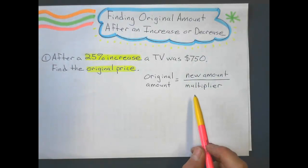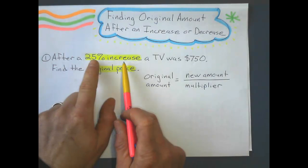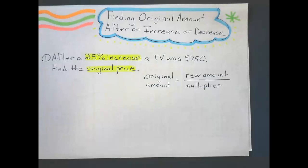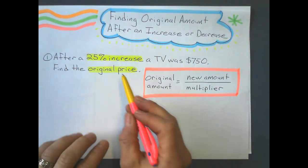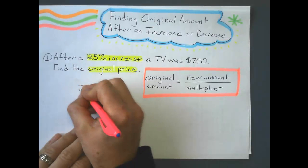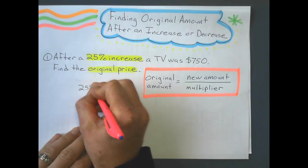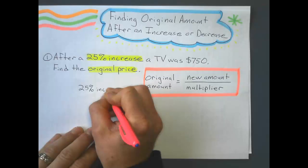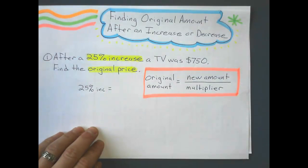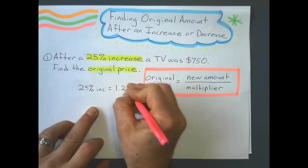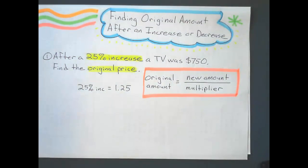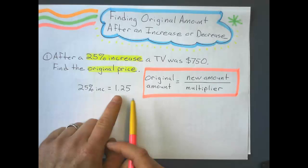And what is the multiplier? The multiplier is what we did in the previous notes with percent increase or decrease. It's writing this as a decimal. So 25% increase means 1.25. This number is my multiplier.